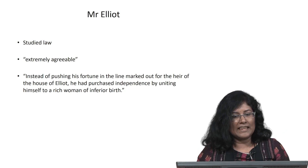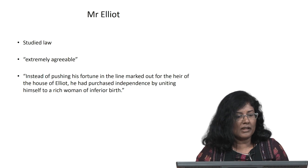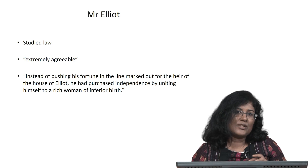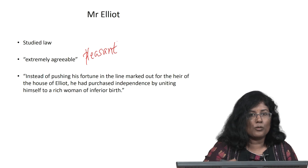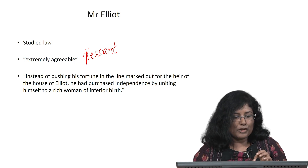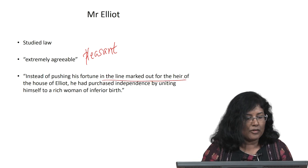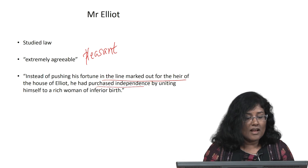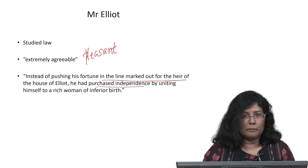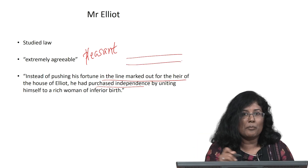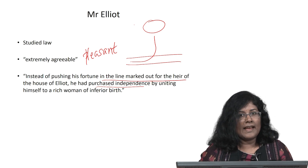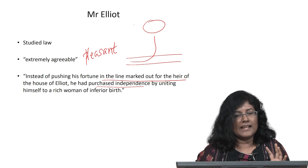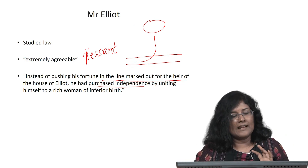Who is William Elliot? He is usually referred to as Mr. Elliot in the book, and he has studied the law. He is extremely agreeable and very pleasant to be with. But instead of pushing his fortune in the line marked out for the heir of the house of Elliot, he had purchased independence by uniting himself to a rich woman of inferior birth. So the Elliot family marks out a path for Mr. Elliot to follow, but he deviates and marries a social inferior who also happens to be rich. This brings disappointment for Elizabeth Elliot and Sir Walter Elliot.